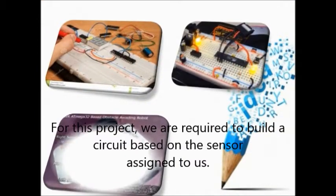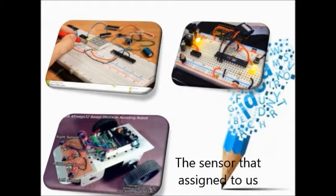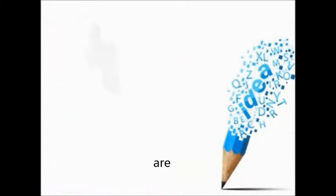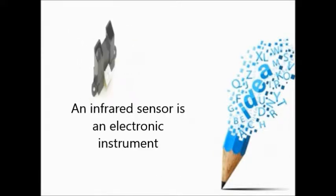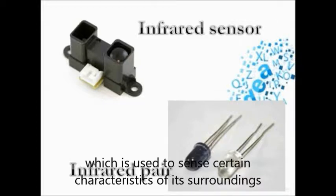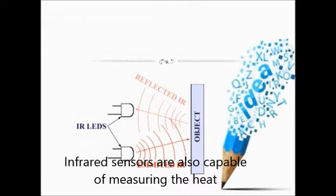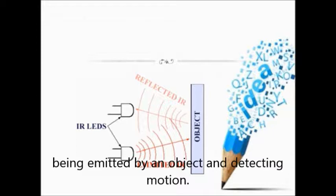For this project, we are required to build a circuit based on the sensor assigned to us. The sensors that are assigned to us are the infrared sensor. An infrared sensor is an electronic instrument which is used to sense certain characteristics of its surroundings by either emitting or detecting infrared radiation. Infrared sensors are also capable of measuring the heat being emitted by an object and detecting motion.